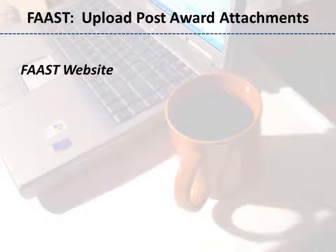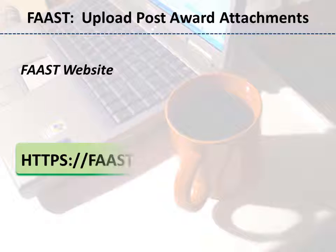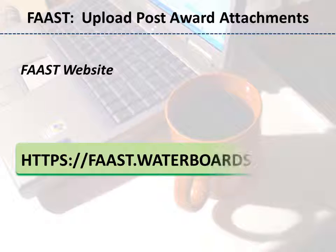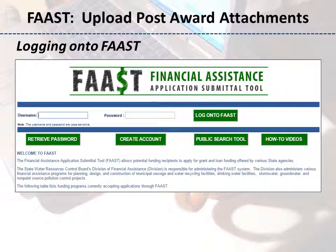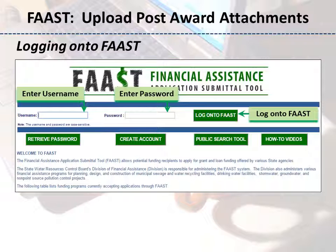Go to the FAST website. On the FAST webpage, a banner stating only secure content is displayed will appear. Click the Show All Content button to proceed. Look for the FAST logo and heading near the center of the screen. Enter your username and password and click the Log onto FAST button to enter the system.